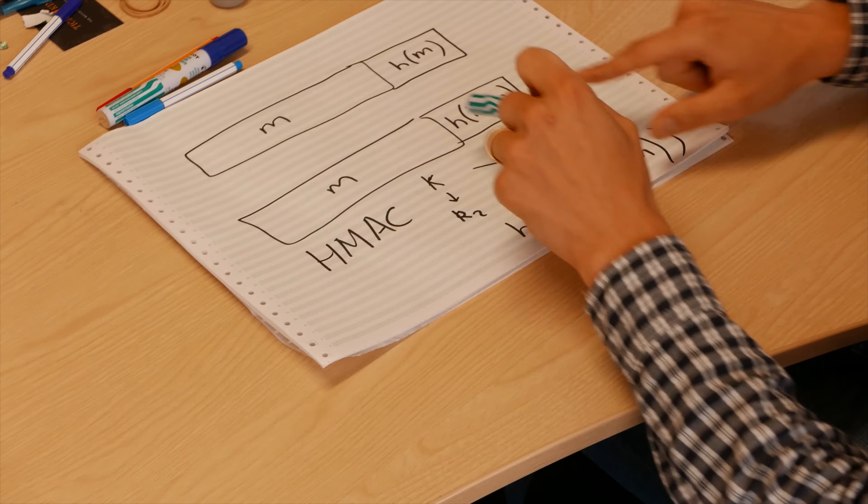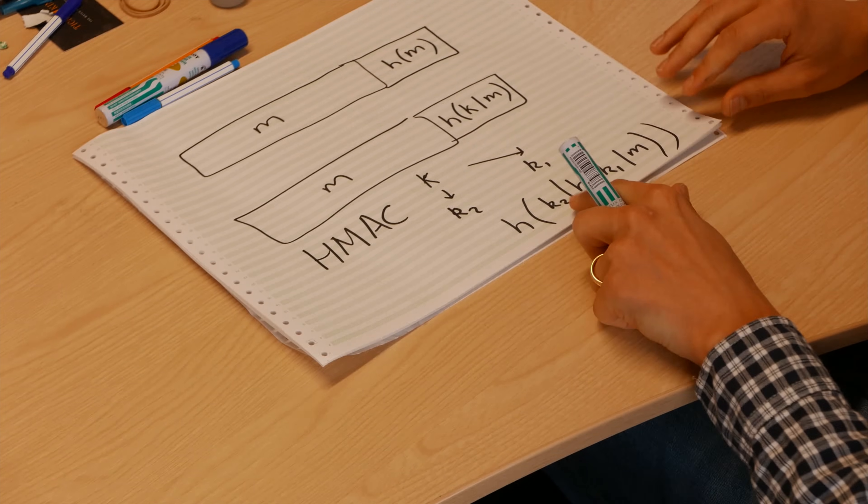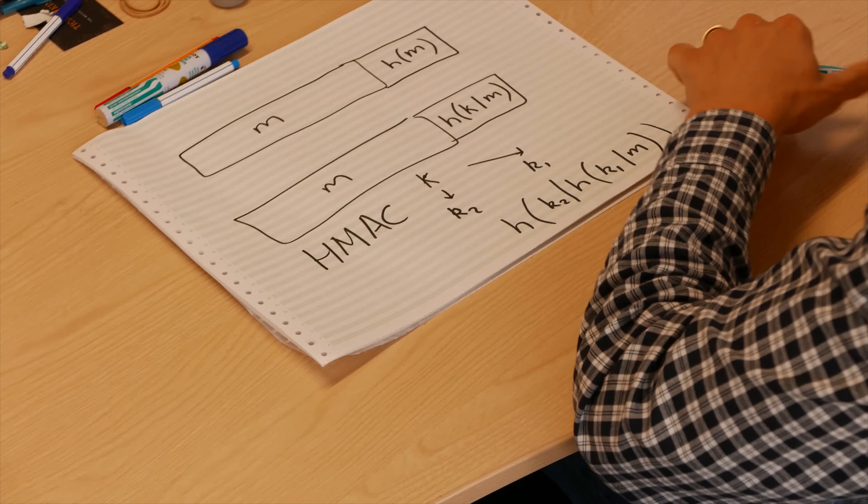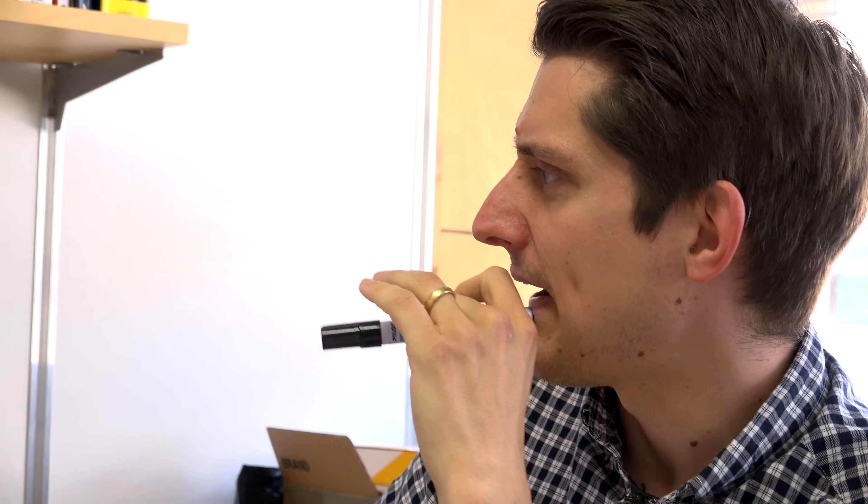Because essentially we would have to know what the internal state of our hash function was after this middle point, which we wouldn't know, whereas we do know it here. I mean, I think the only question I would have would be how those keys are derived. That's a very good question. Okay, so these keys are derived by basically taking two constants and XORing them with the key separately.